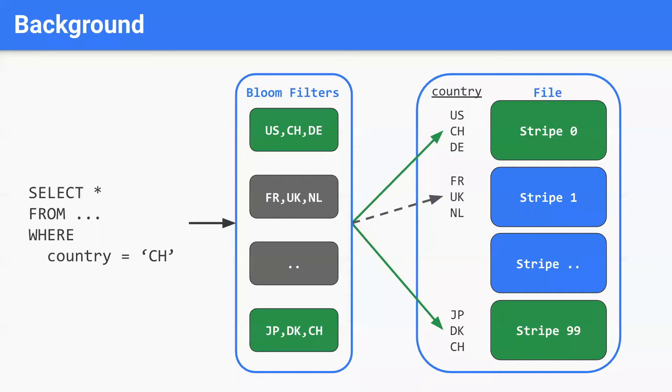In modern data warehousing, data skipping is essential for high query performance. For example, Google's internal power drill engine skips more than 90% of data on average during query execution. The enabler of this high amount of data skipping are secondary indices, such as min-max values or bloom filters. These filters are typically stored per column and chunk of data, or stripe as we call it here.